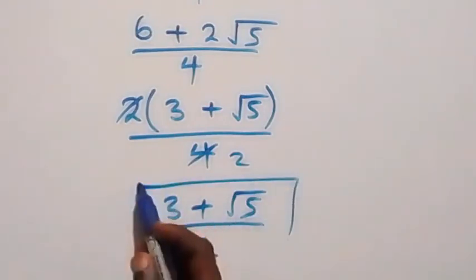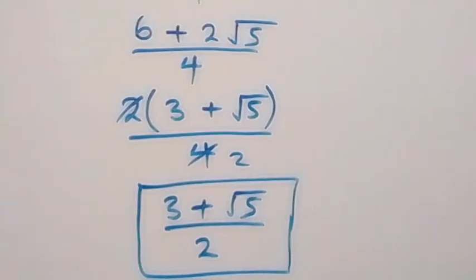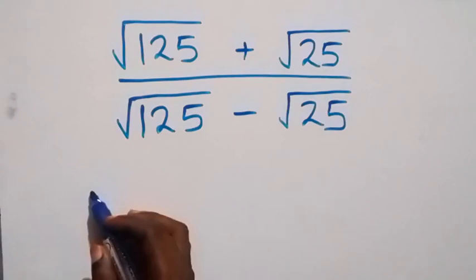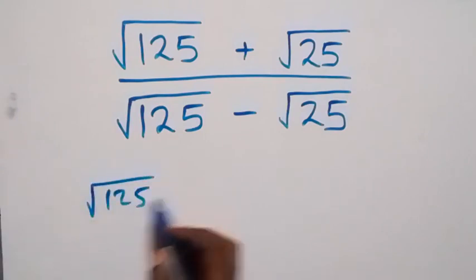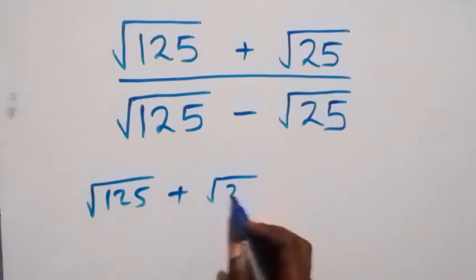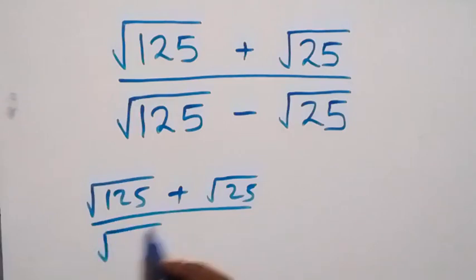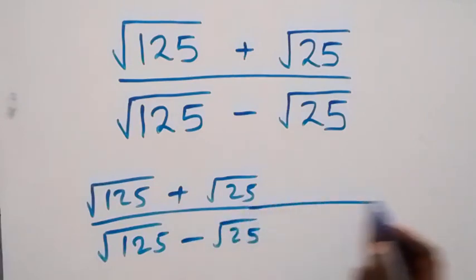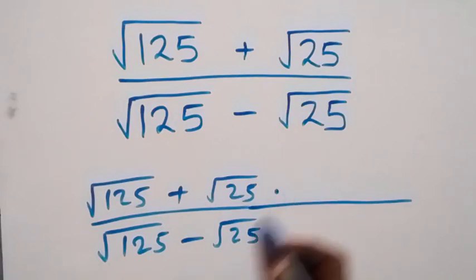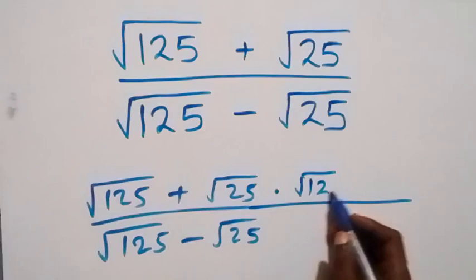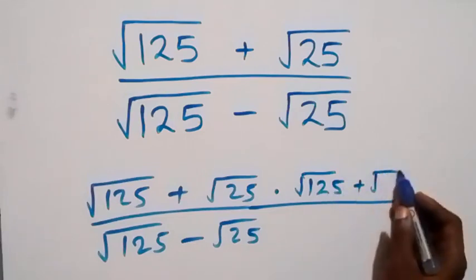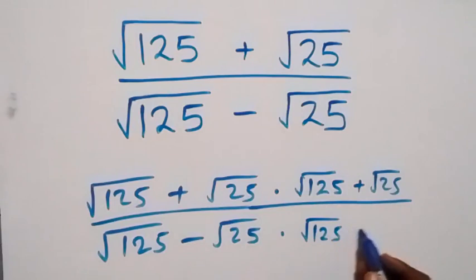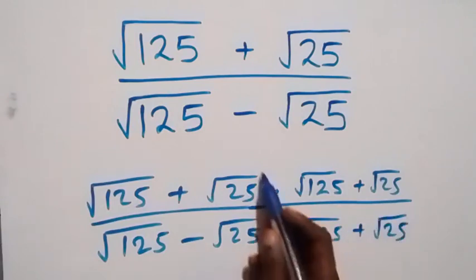Here we have the final answer to this problem. We can also use another method: from here we can rationalize directly and multiply by the conjugate. This gives us root 125 plus root 25 divided by root 125 minus root 25. Then we multiply by the conjugate, which is root 125 plus root 25.